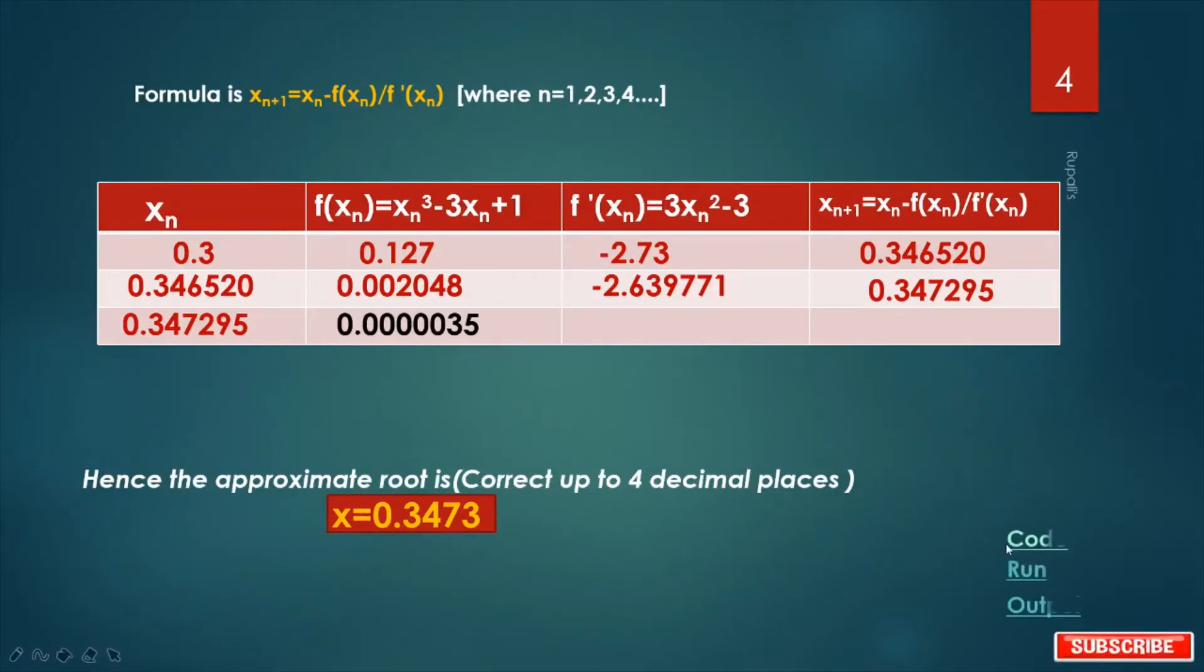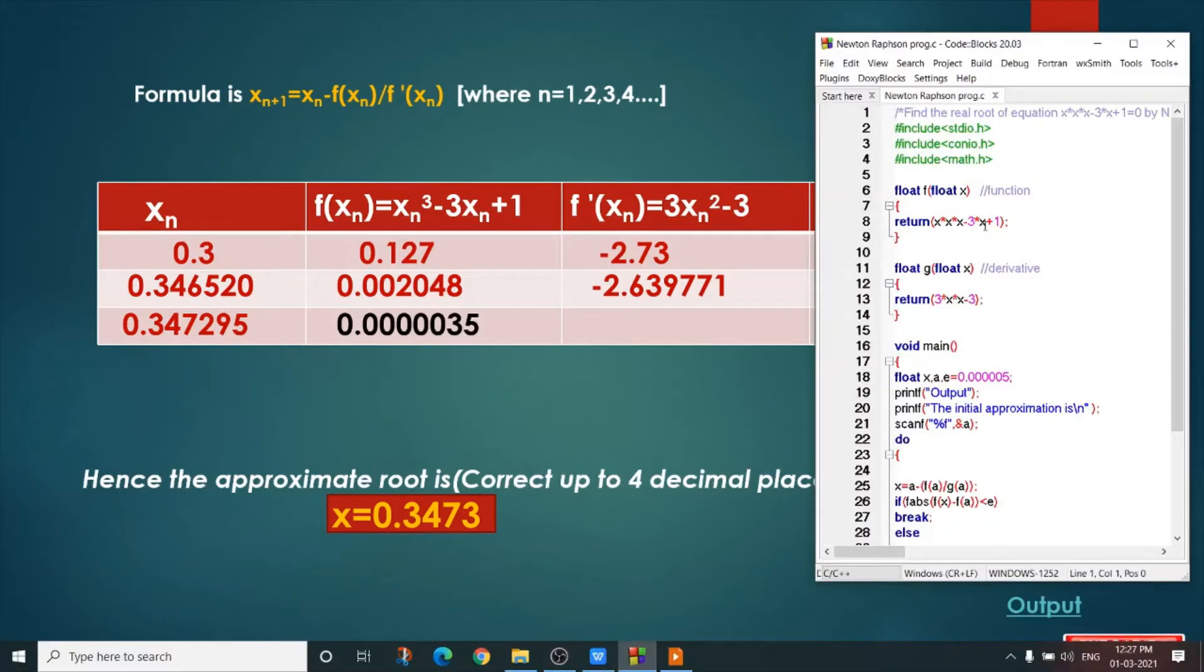First see the code. In this program, there are two functions f and g. For both functions, return type is float. Also, argument is float.